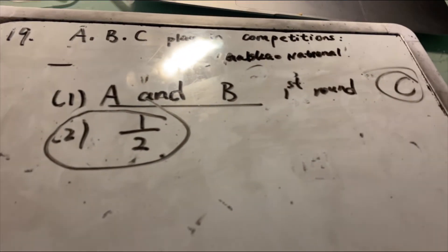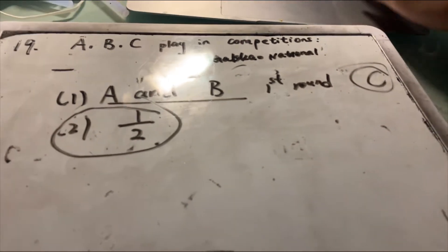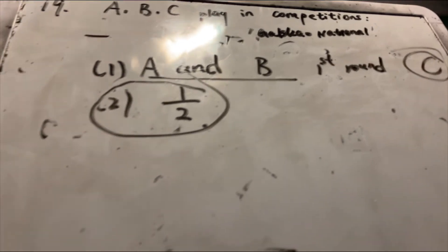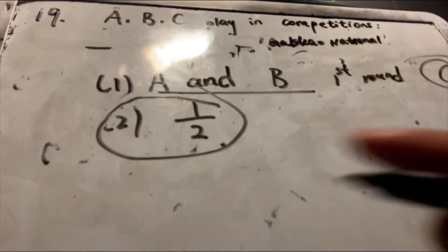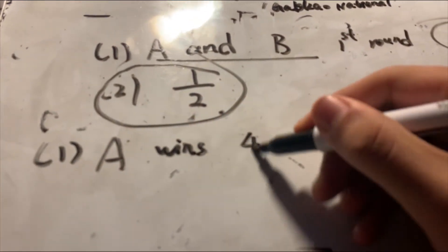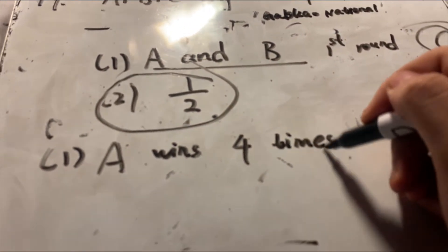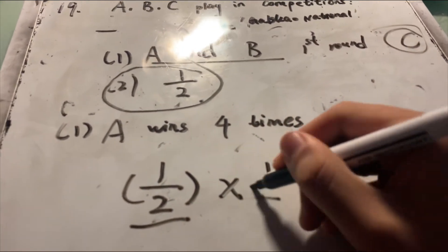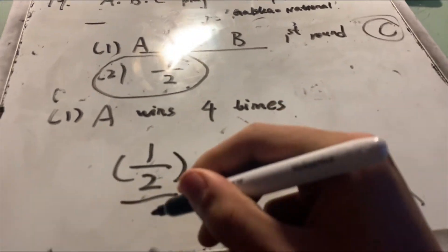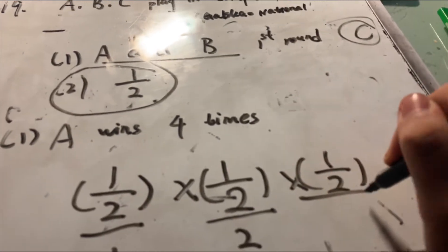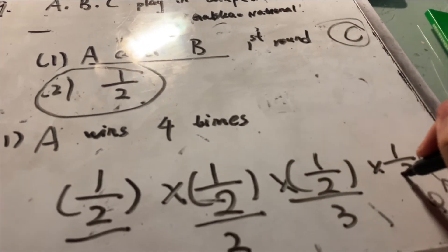The second assumption makes the problem less difficult — if each person won with a different percentage, the calculation would be much harder. Now, the first problem: what is the probability that A wins four times in a row? This is straightforward. For each win the probability is 1/2, so for four consecutive wins it is (1/2)^4 = 1/16.